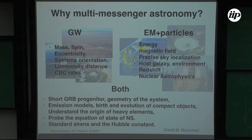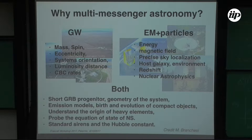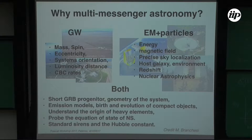Multi-messenger astronomy means using gravitational waves typically as a trigger. LIGO and Virgo send the community of astronomers an alert, and then all sorts of observatories — including neutrino observatories and cosmic ray observatories — follow up the event. Through gravitational waves, the information extracted includes the mass, spin, eccentricity of the system, system orientation, luminosity distance, and we can infer rates of compact binary coalescences, which is important for stellar evolution.